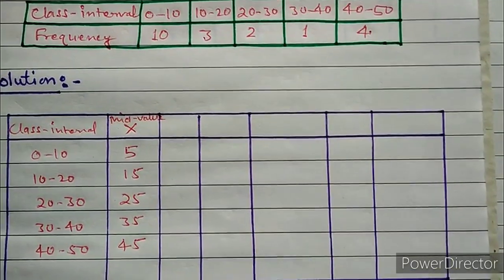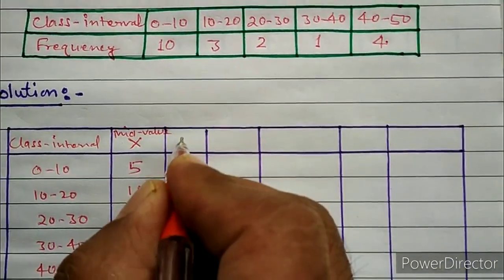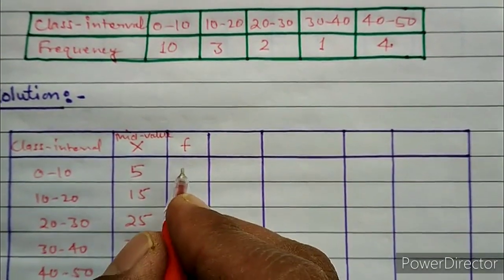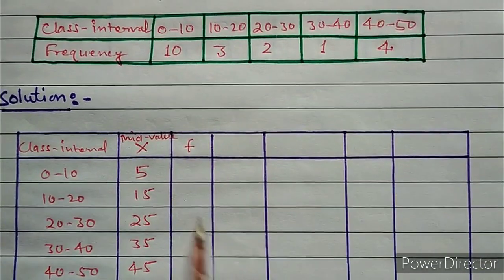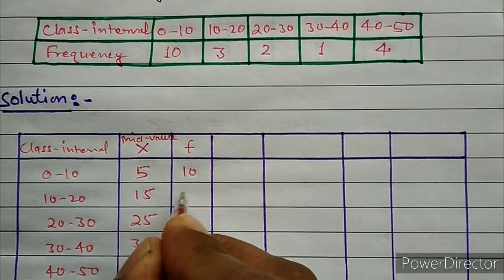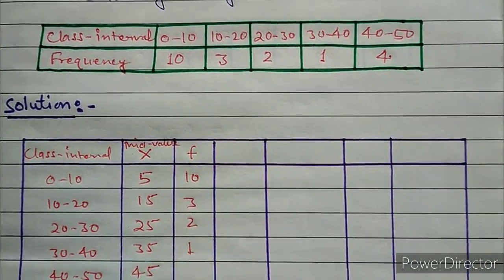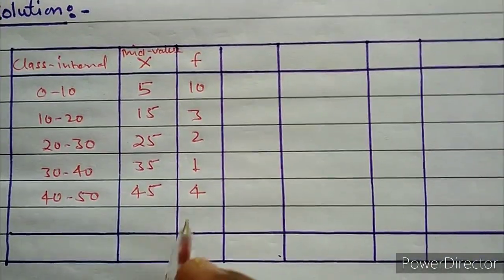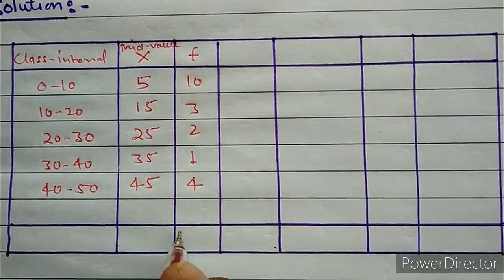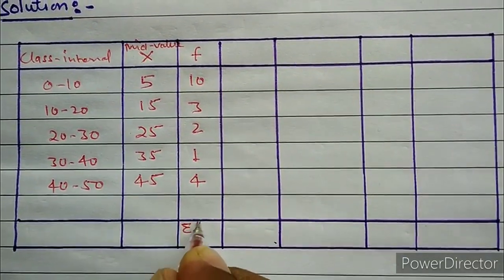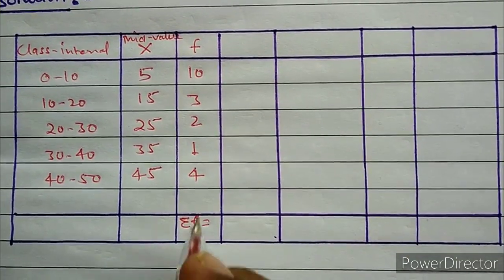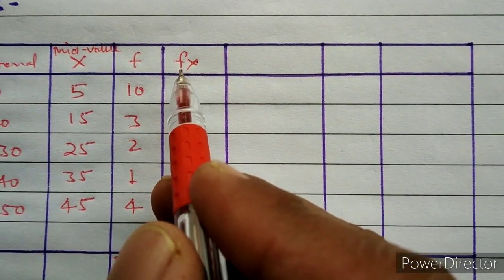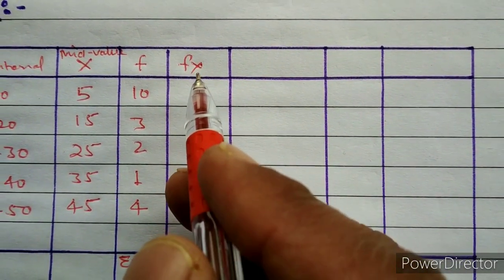In the third column we will write the frequency corresponding to its class interval: 10, 3, 2, 1, and 4. At the last we will add these frequencies to get sigma f. Here sigma f equals 20.